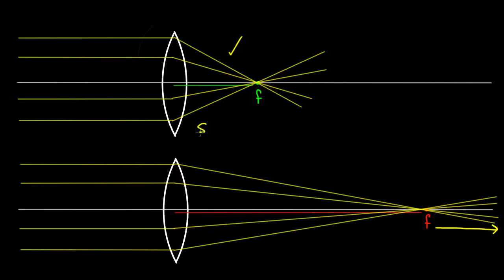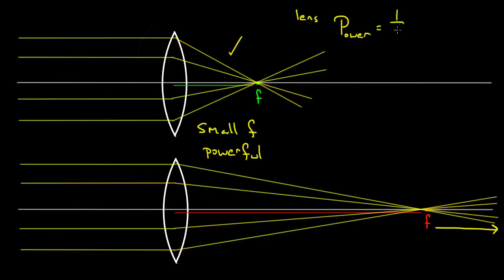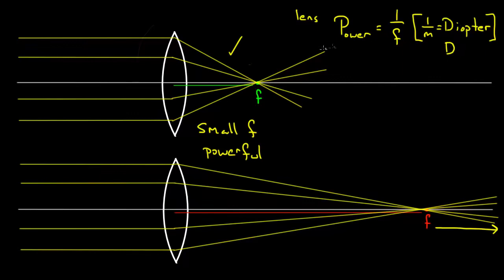So, a small focal length means a powerful lens. Rather than talk about focal length, optometrists and ophthalmologists often talk about lens power. Lens power is defined as one over the focal length — and this is not power like joules per second. Using SI units, that gives us one over meters, which is given the special name diopters, represented with a capital D. If your diopter measurement is large, that means a powerful lens; if it's small, that means a less powerful lens.